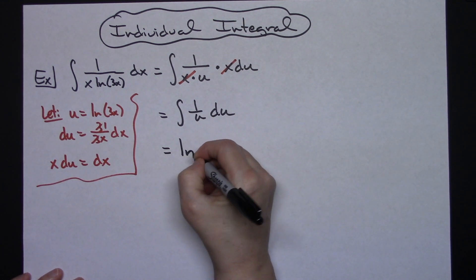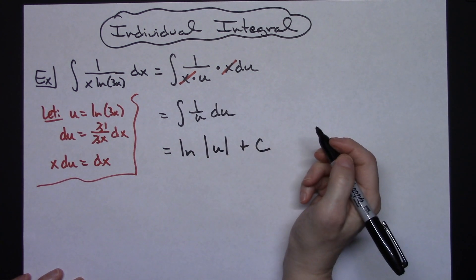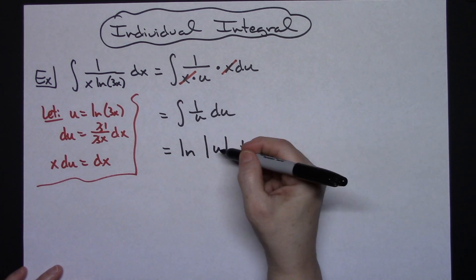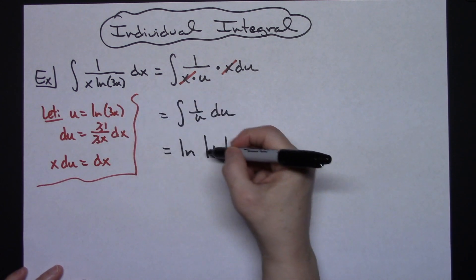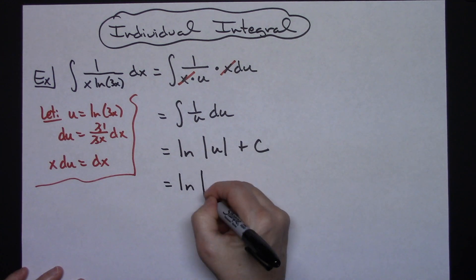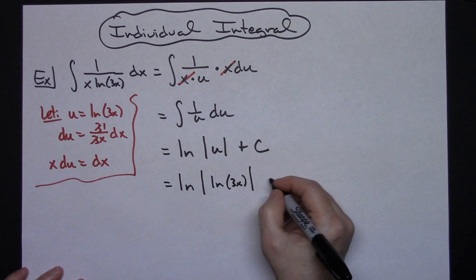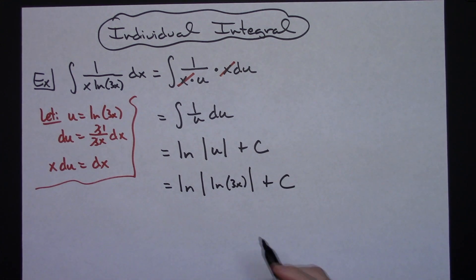So I go ahead and integrate natural log absolute value of u. I can add plus C because I have integrated at this point. And for the last step I'm going to replace u with what I originally said it was going to be equal to, so natural log absolute value natural log of 3x and then plus C.